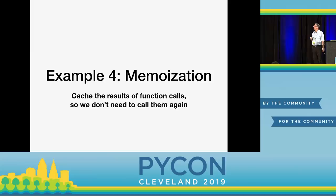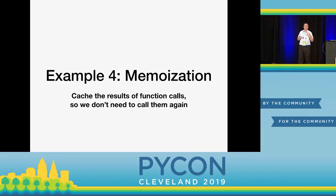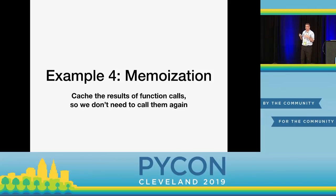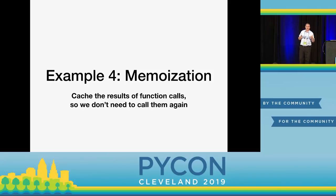Another example: memoization. Not memorization — memoization, which is more than 50 years old. The idea is: if I have a function whose arguments always lead to the same result — think basic mathematical functions, adding, multiplying, dividing — if I add two and two, the next time I add two and two it had better be four again. Wouldn't it be nice if every time I look at my arguments, if I've seen them before for this function, I just return the cached value? It's not very useful for simple addition, but for something like SHA1 or RSA, you might want this kind of caching.